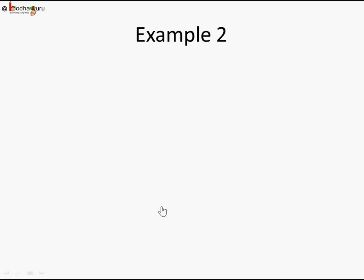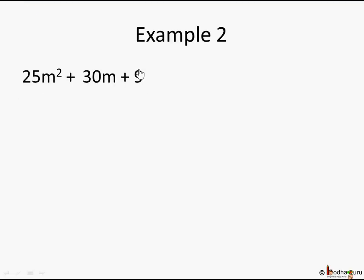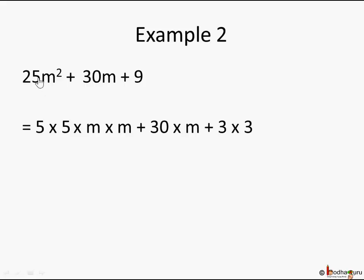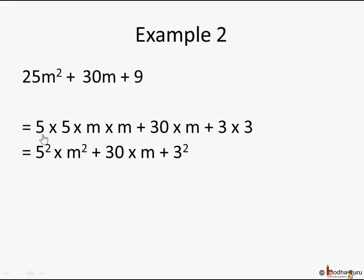Isn't it easy? Let's take another example: 25m² + 30m + 9. As you can see, 9 is a perfect square — 3² — and 25 is also a perfect square — 5². We write the extreme terms as their products: 5×5×m×m for 25m², and 3×3 for 9. This gives 5²×m² + 30m + 3². Using the rules of exponents, 5²×m² can be written as (5m)².